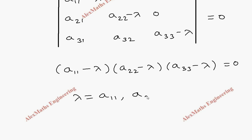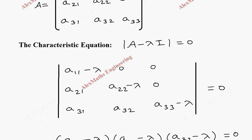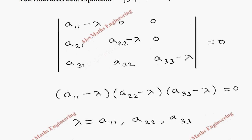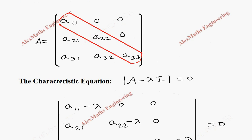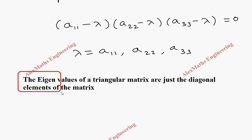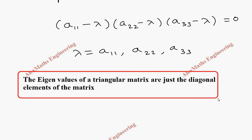From this it is clear that the lambda values come from the factors: (a11 − λ), (a22 − λ), and (a33 − λ). These are nothing but the leading diagonal elements of the triangular matrix, and from this we prove that the eigenvalues of a triangular matrix are just the diagonal elements of the matrix.